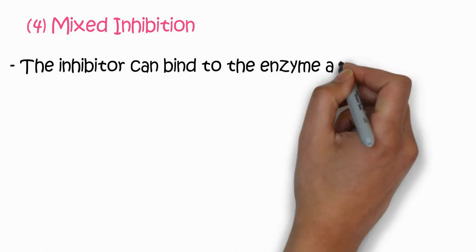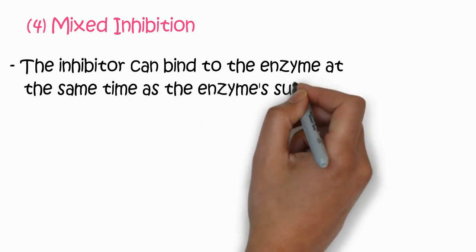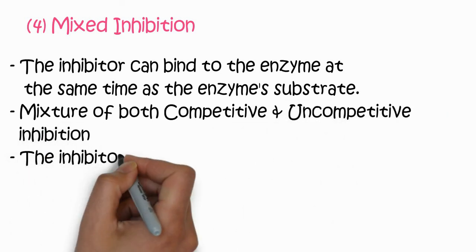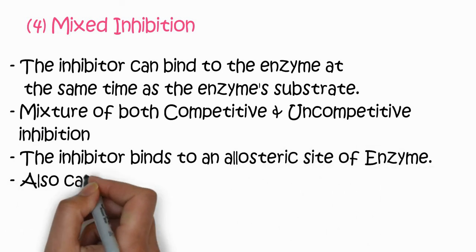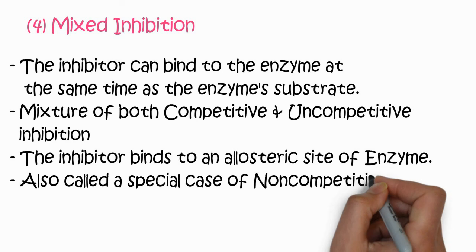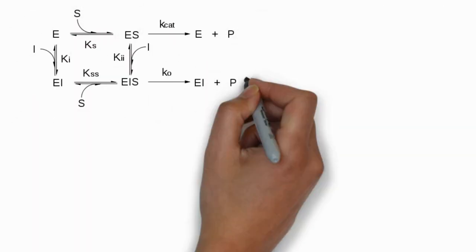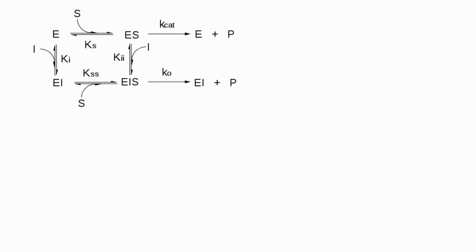The last type is mixed inhibition. In this case the inhibitor can bind to the enzyme at the same time as the enzyme-substrate complex. It is a mixture of both competitive and uncompetitive inhibition. The inhibitor binds to the allosteric site of the enzyme, and it is also considered a special case of non-competitive inhibition. The enzyme attaches to the inhibitor directly, forming an enzyme-inhibitor complex, and then the substrate attaches, forming an enzyme-inhibitor-substrate complex which releases enzyme-inhibitor and product.